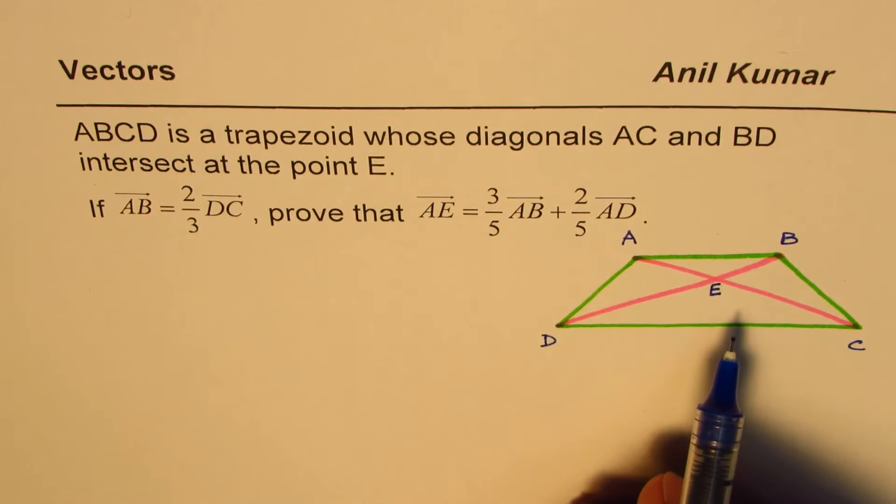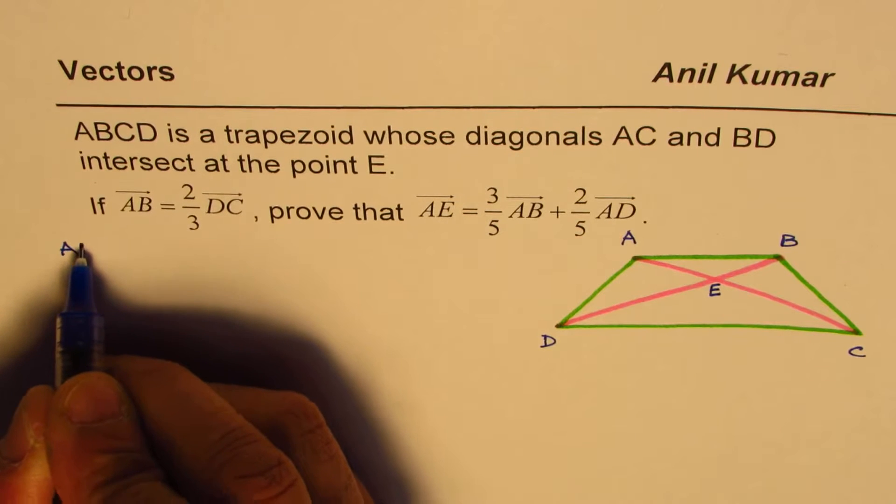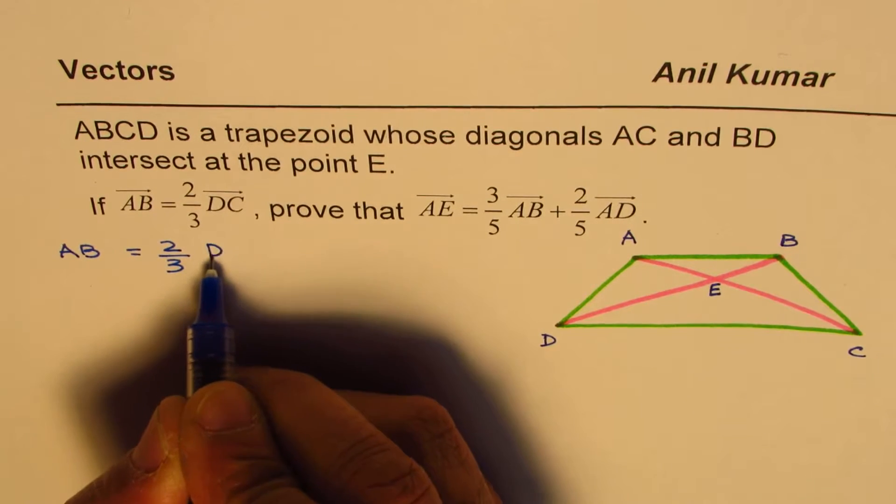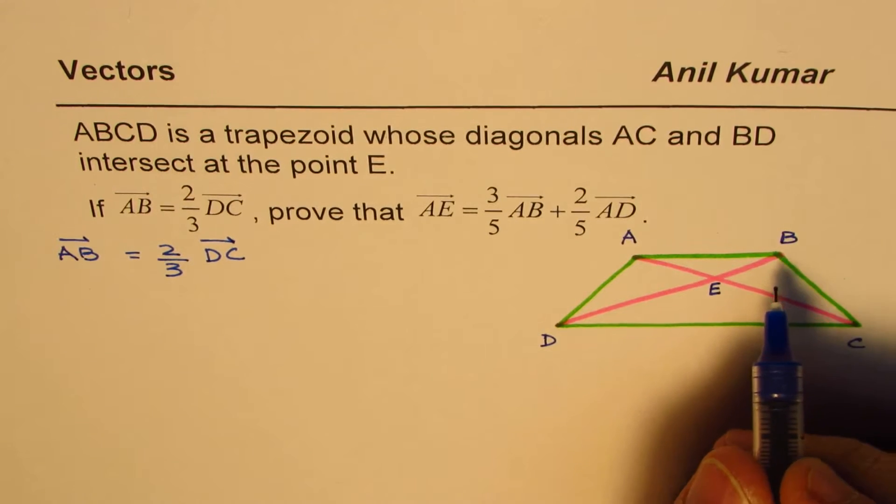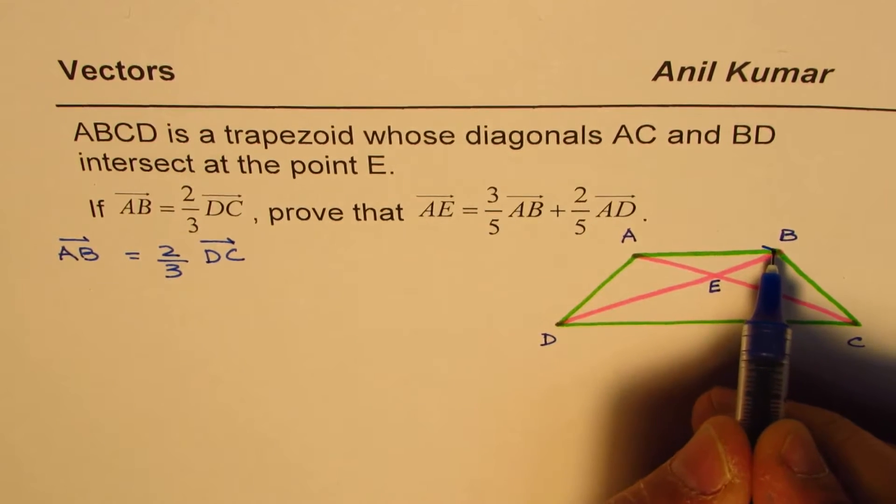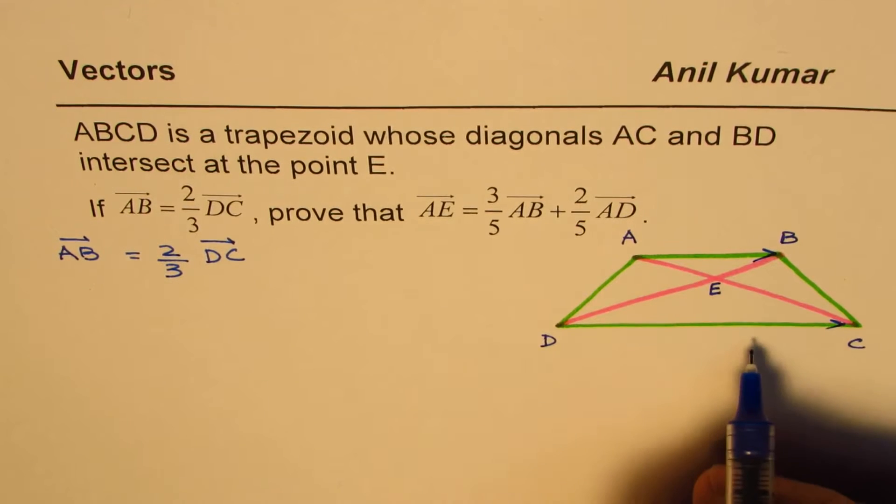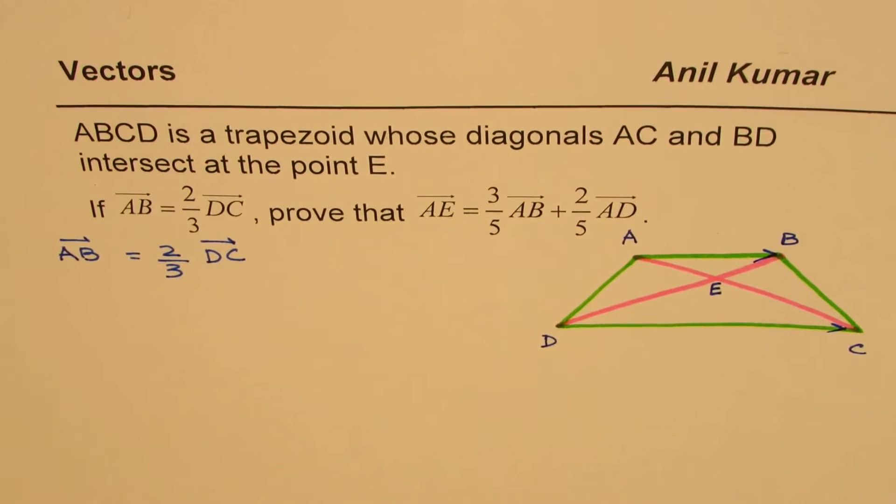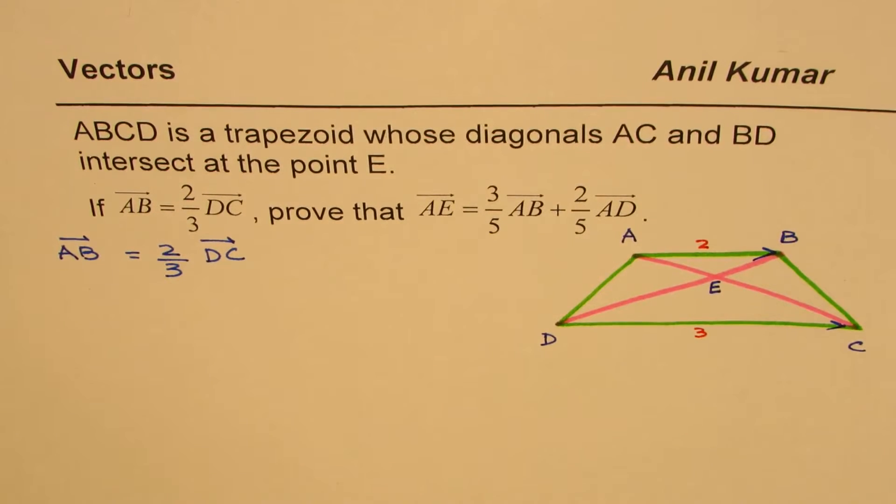Now let's see how to prove it. What are we given? We are given that AB equals two-third of DC. Now if you look at the diagram, then AB is this vector, and DC is this vector. So we are given the ratio of these two vectors. This ratio is 2 is to 3, so let me write the numbers here. The ratio is 2 is to 3.